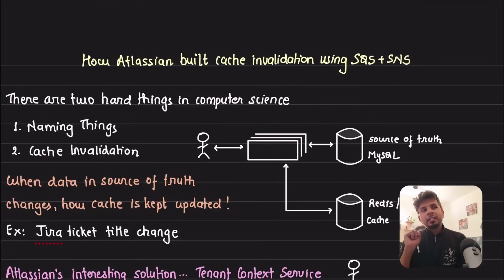In this video we will take a look into a very interesting approach that Atlassian took to do cache invalidation. They leverage SQS and SNS combination to do that. It's pretty uncommon and we'll see what they did, why they did, when they changed, what they changed, and how they changed. It's a pretty interesting deep dive that we'll do today, so let's get started.